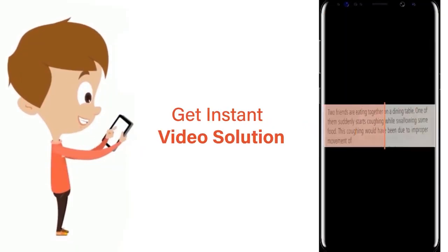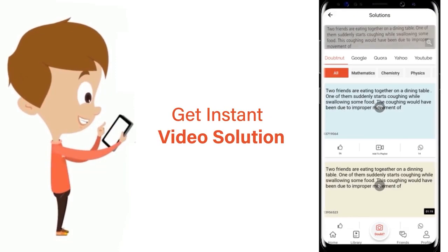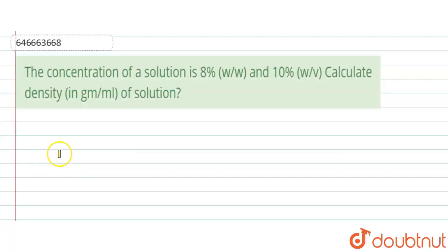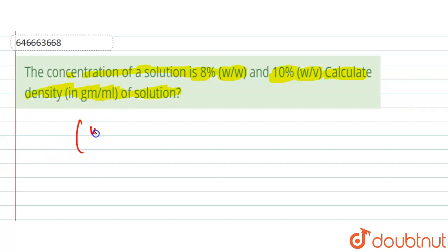Hi everyone, let's take a question. The concentration of a solution is 8 percent weight by weight, and 10 percent weight by volume. We need to calculate the density in grams per milliliter of the solution. The weight by weight concentration is given as 8 percent.